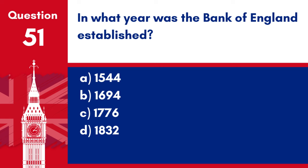Question 51. In what year was the Bank of England established? a. 1544. b. 1694. c. 1776. d. 1832. Answer: b. 1694. The Bank of England was established in 1694, making it one of the oldest central banks in the world.